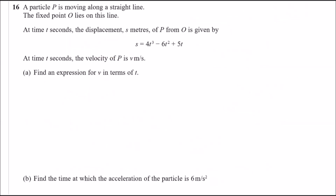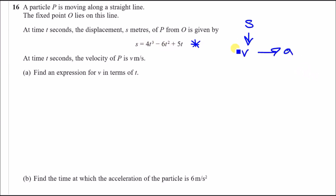Alright, number 16. A particle P is moving along a straight line. At time t seconds, the displacement s meters of P from a fixed point O is given by an equation. At time t seconds, the velocity is v meters per second. Find an expression for v in terms of t. A useful fact here is that we use differentiation to go from s to v. To go from displacement to velocity, differentiate with respect to t; and to go from velocity to acceleration, differentiate again. Velocity is also known as ds/dt and acceleration as dv/dt.